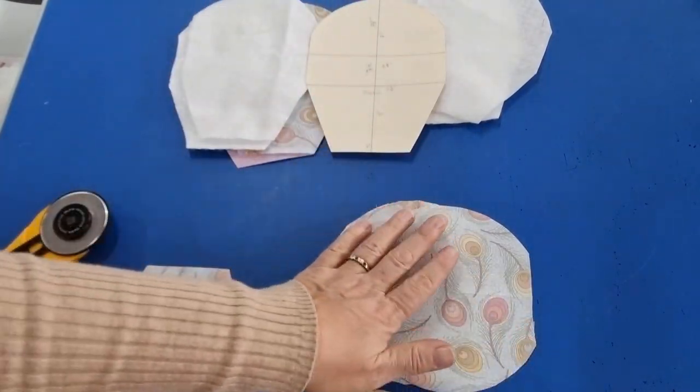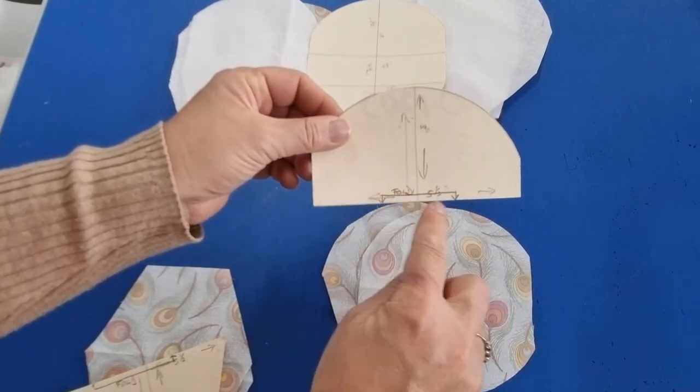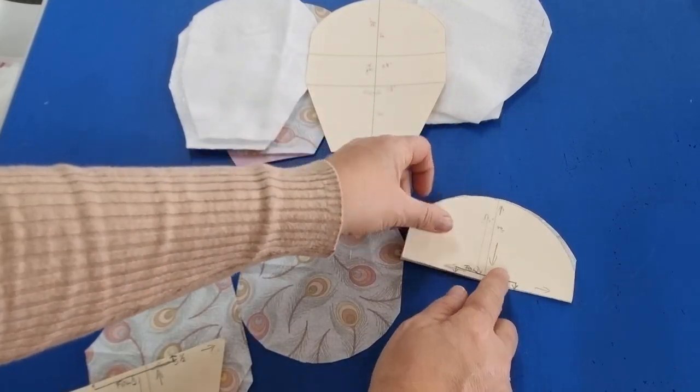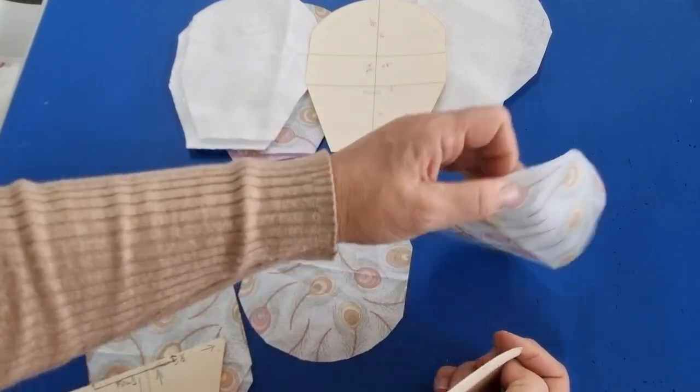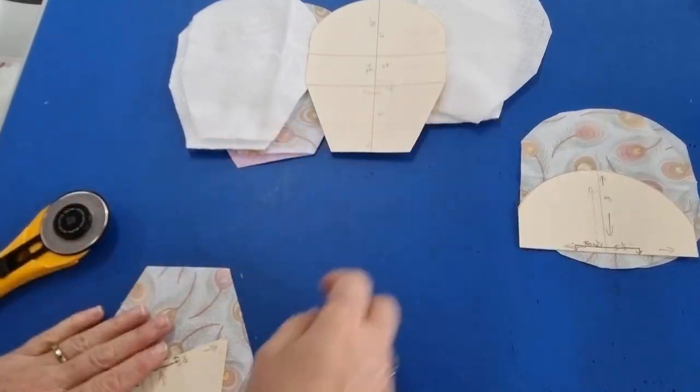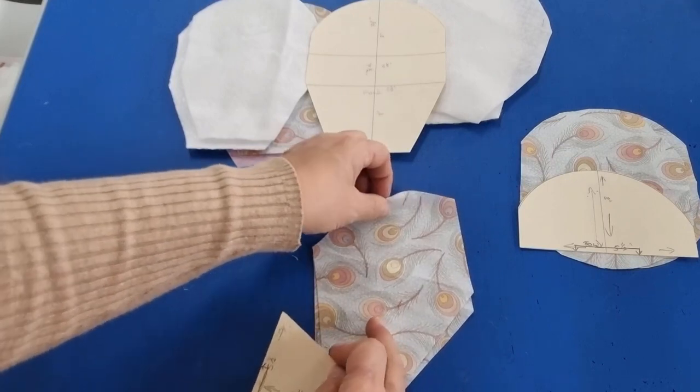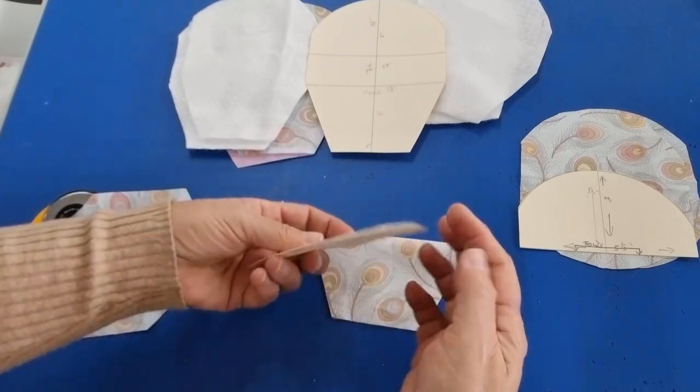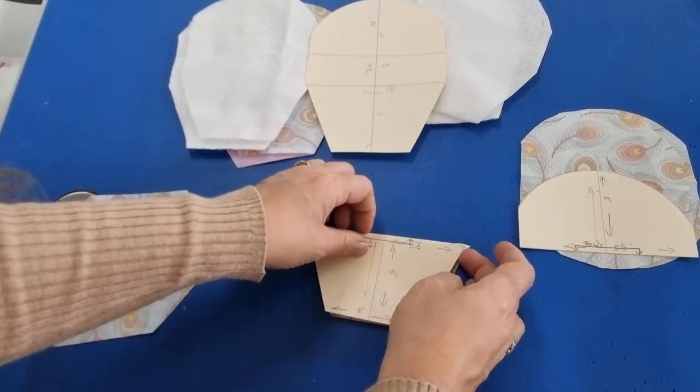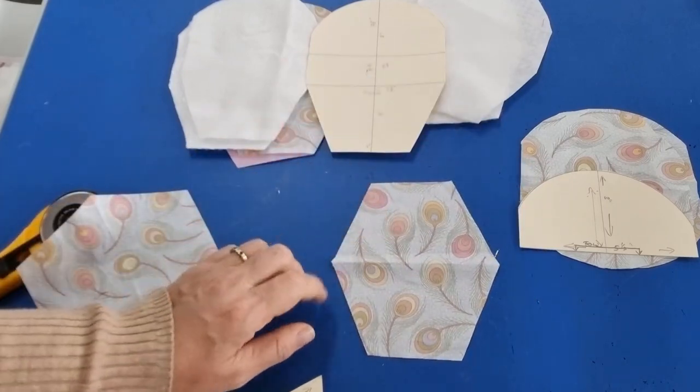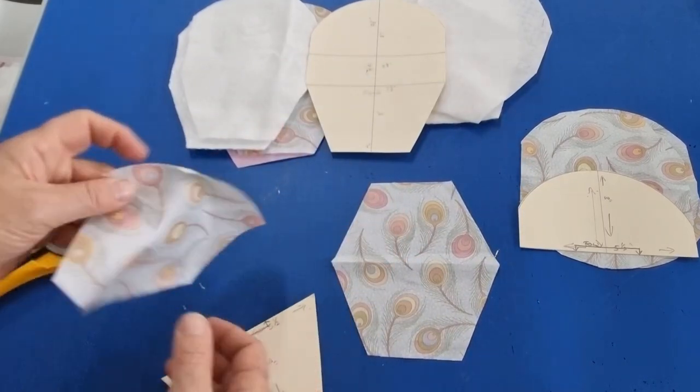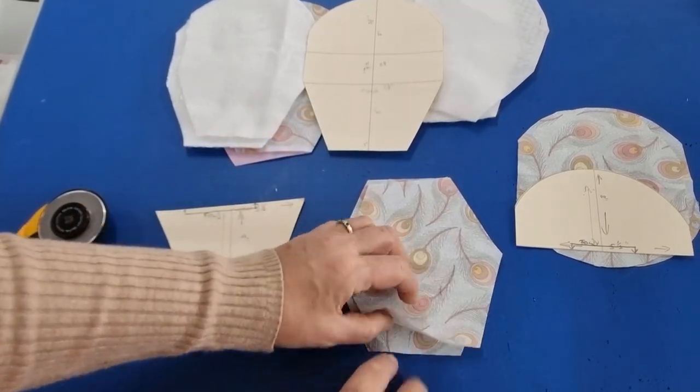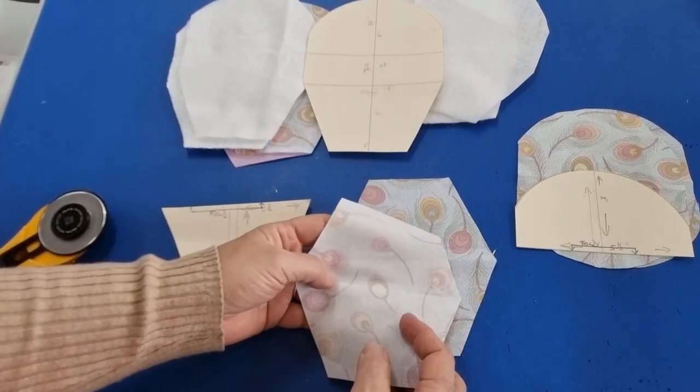For the fingers, we want two of these cut on the fold. So that's the fabric on the fold with the template like that, and we'll have two of those. And the same for the thumb area: we've got two elongated hexagons, basically. So it's a piece of fabric cut on the fold. It's just less sewing this way—you don't have that extra seam to do. So we've got two of those.